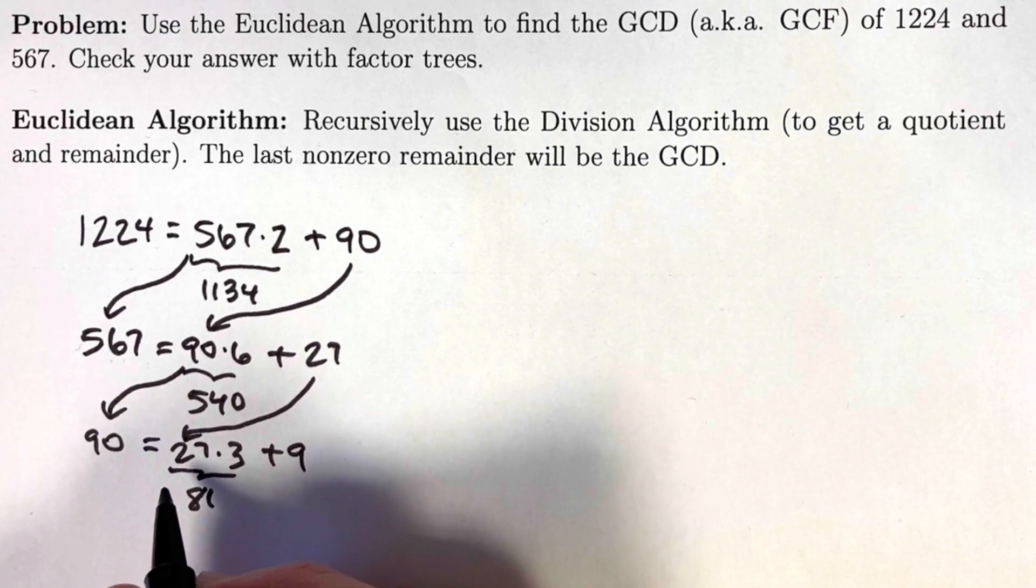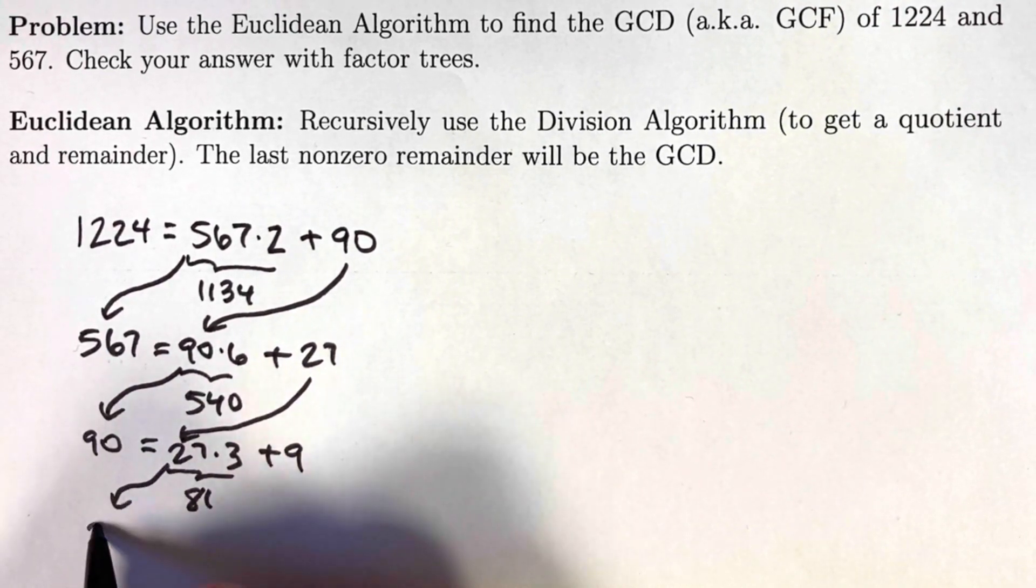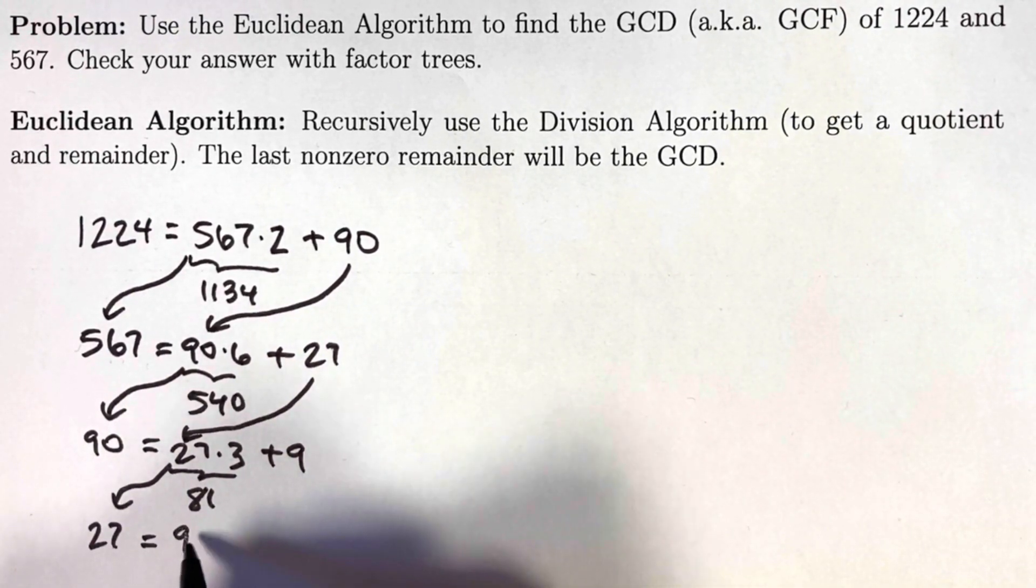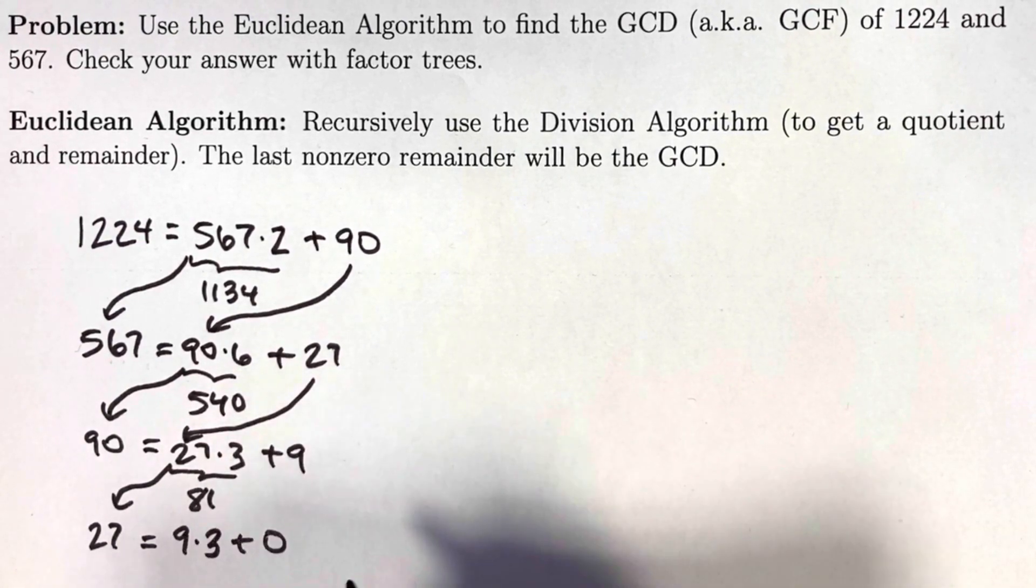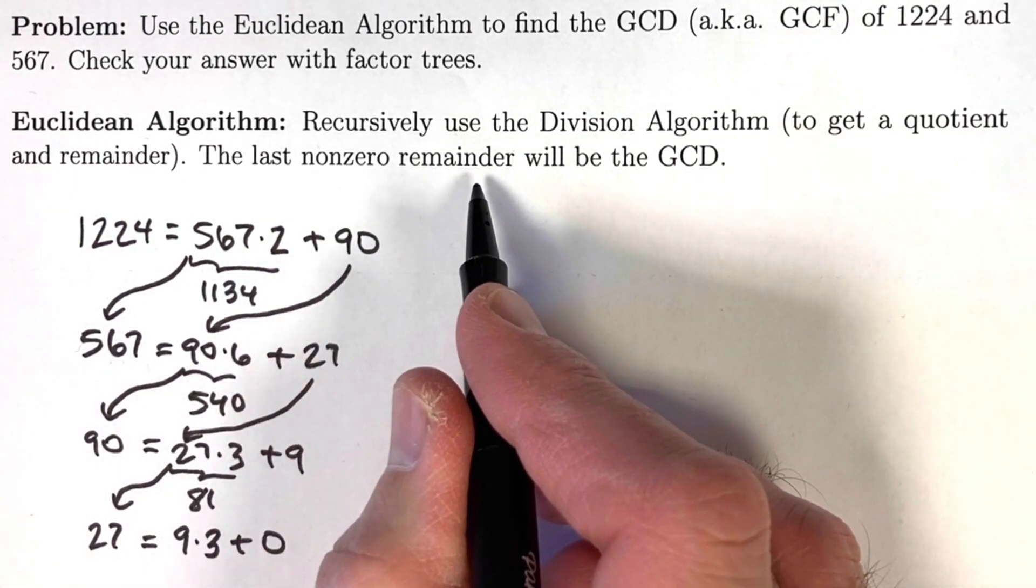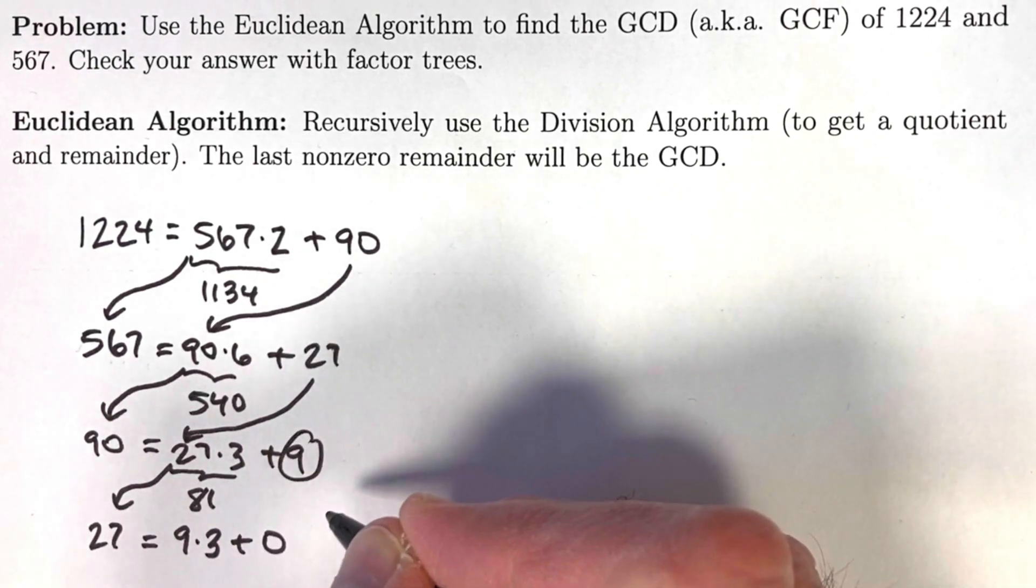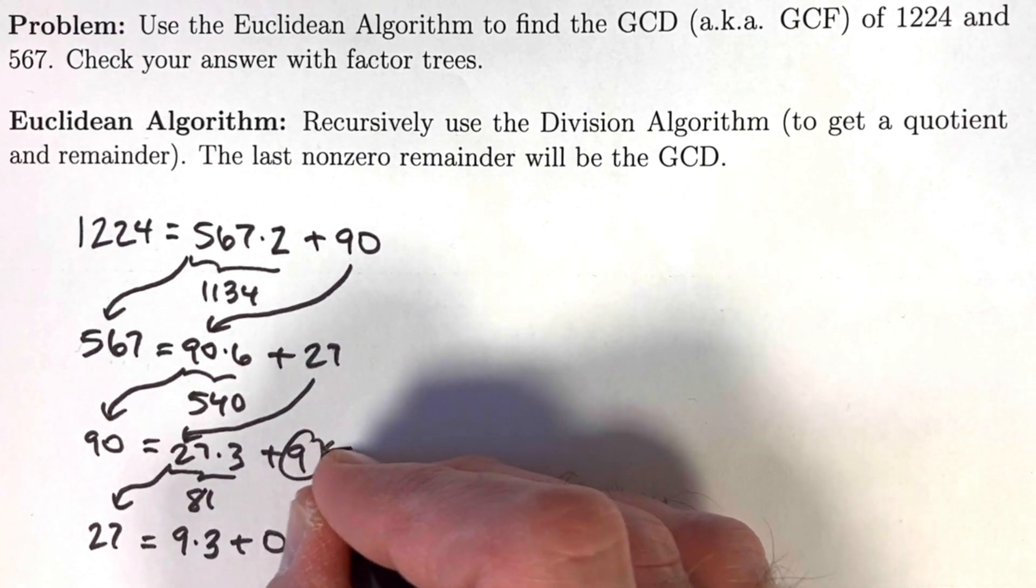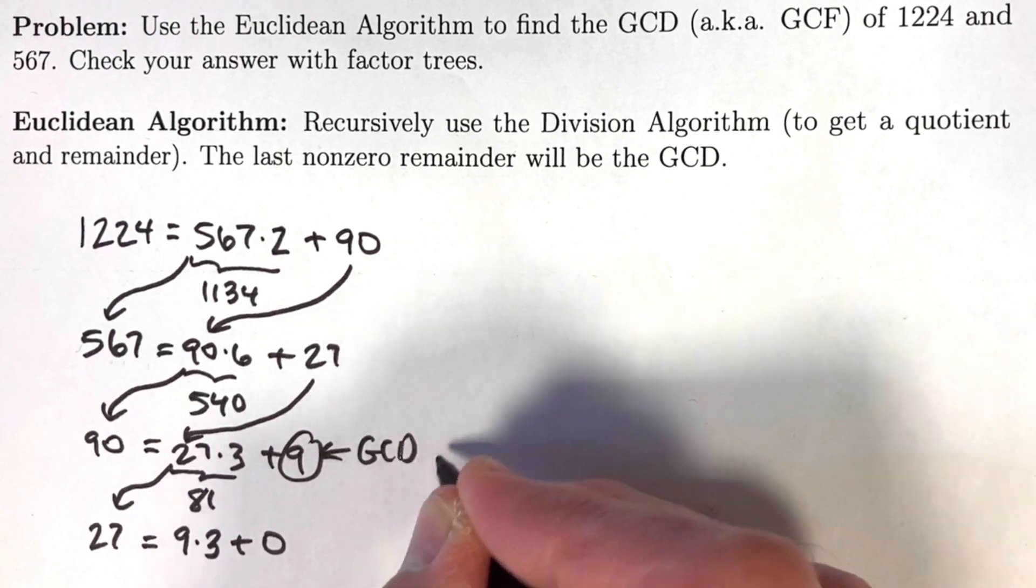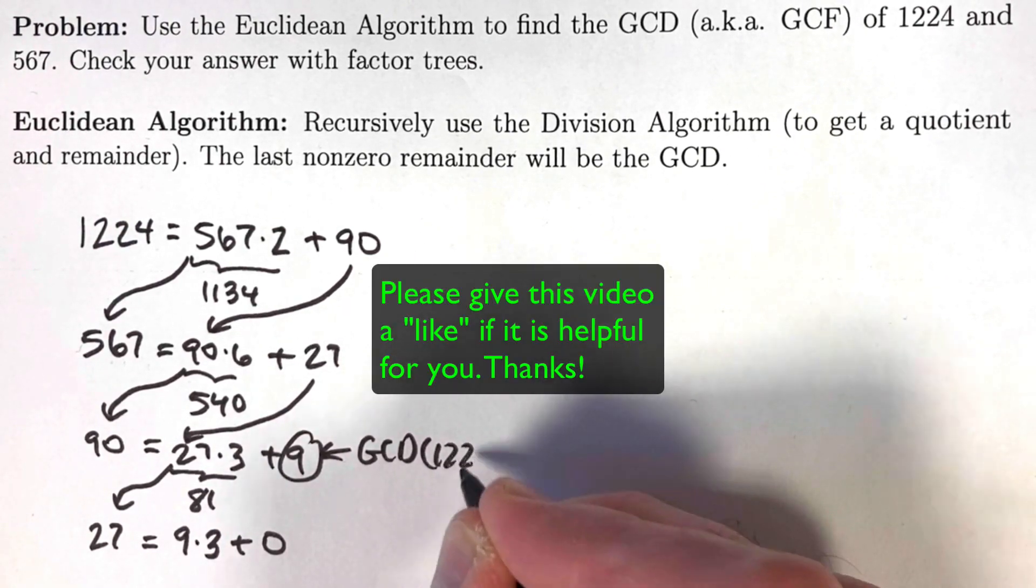One more step, and we'll be done. 27, when we divide it by 9, is 9 times 3, with a remainder of 0. As said here, the last non-zero remainder will be the GCD. 9 is the last non-zero remainder. This is the answer. This is the GCD of 1224 and 567.